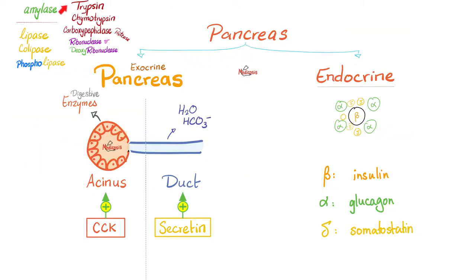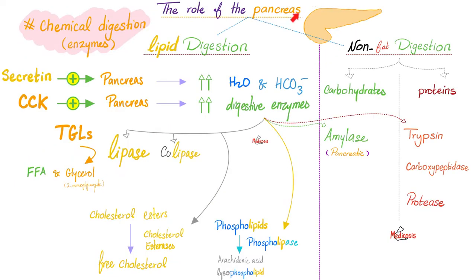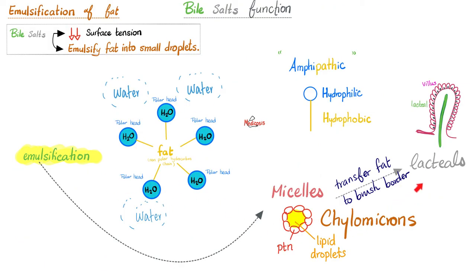Here is the exocrine pancreas with all of its enzymes, and here is the endocrine pancreas with its hormones. Next, the liver and the biliary system. Don't forget the ampulla of Vater, which is a combination — a union between the common bile duct and the main pancreatic duct — opening into the posteromedial aspect of the second part of the duodenum. The lovely pancreas is important for digestion of proteins, carbohydrates, and fat — chemical digestion, enzymatic digestion. But when it comes to bile acids and bile salts, it's not chemical digestion — it's mechanical digestion by means of emulsification, agitation with water, and micelle formation, increasing the surface area available so that the pancreatic enzymes can digest the fat.